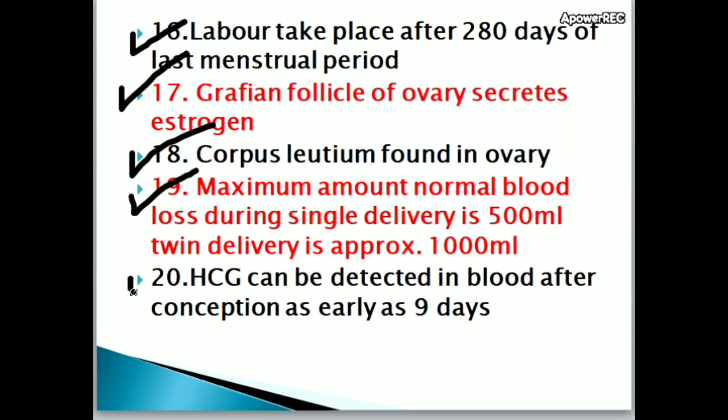HCG (human chorionic gonadotropin) can be detected in blood after conception as early as 9 days.